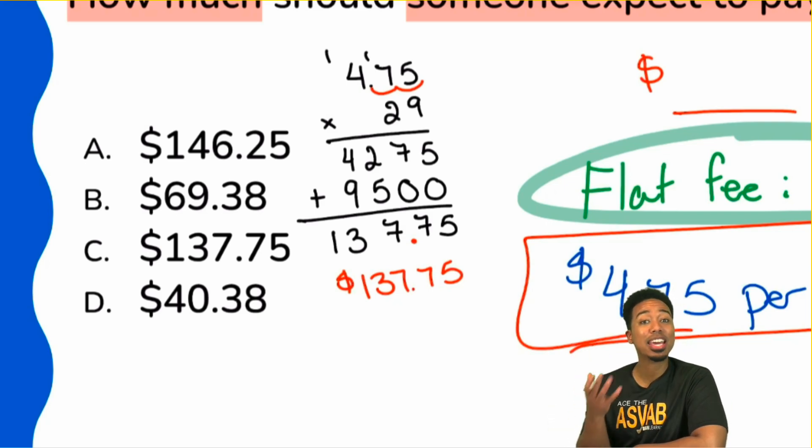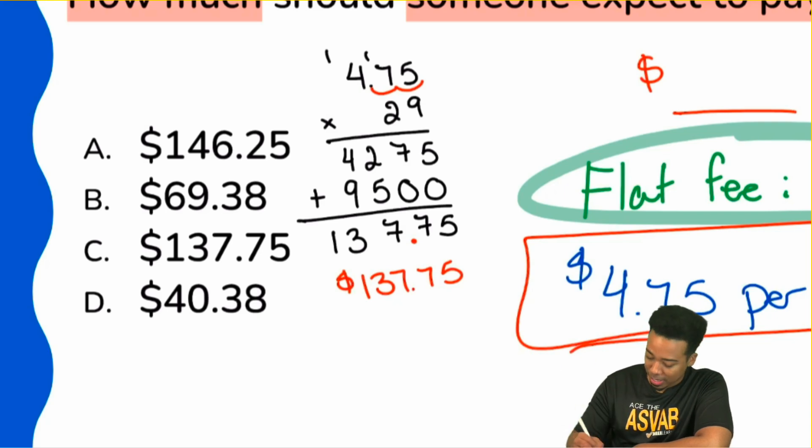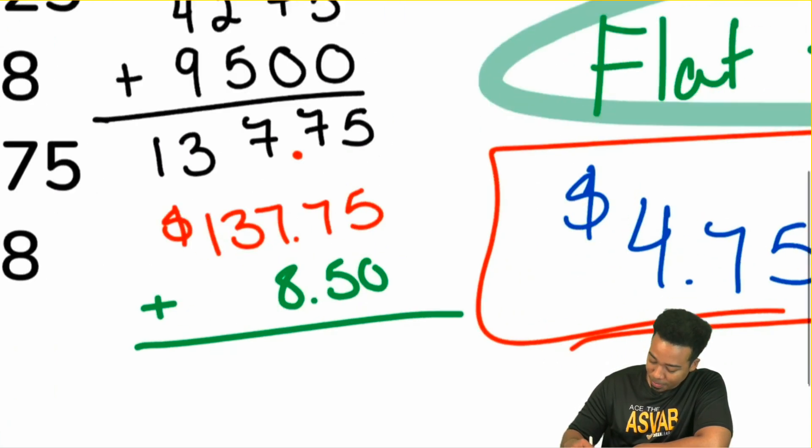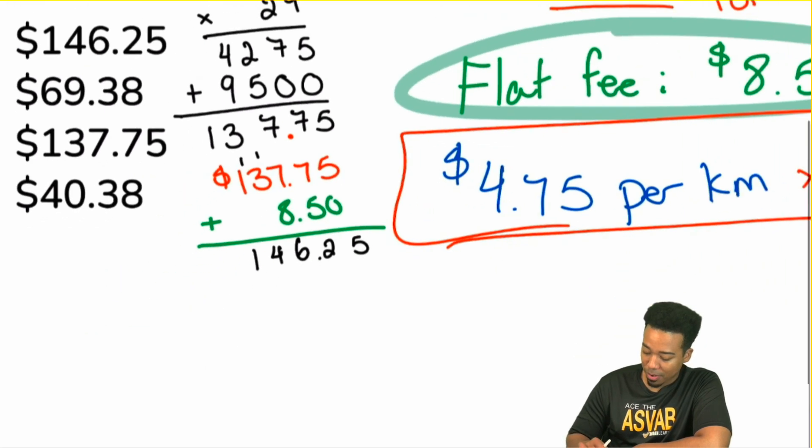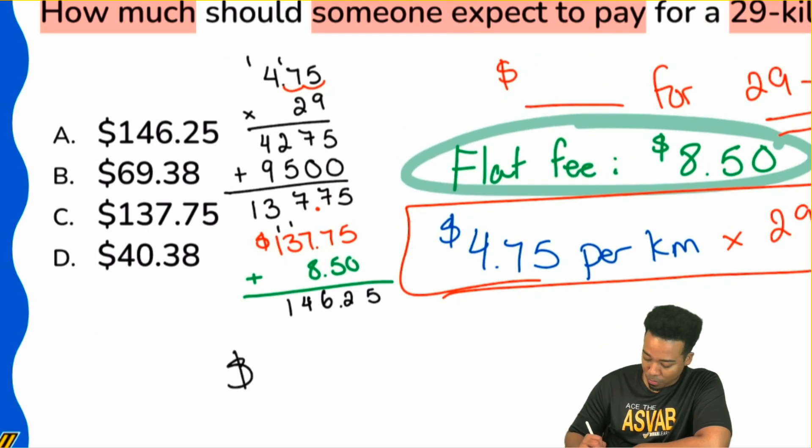Remember, we needed to pay $8.50 just to get into the cab. So we didn't include that, we have to bring that back in. So it's going to be $8.50 to get back in. And so when we add this back, 5 plus 0, 7 plus 5 that's 12, 1 plus 7 plus 8 is 16. Then that's 4 and 1. So we have a final answer actually of $146.25.